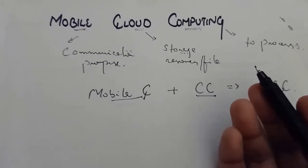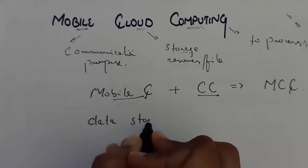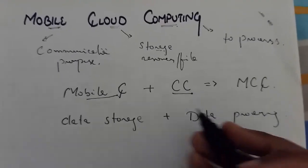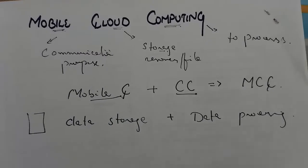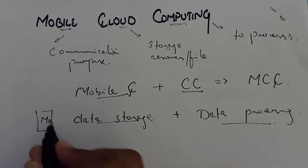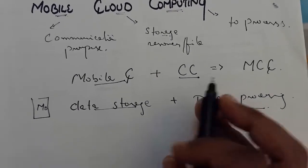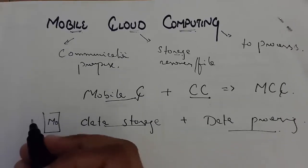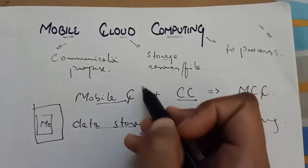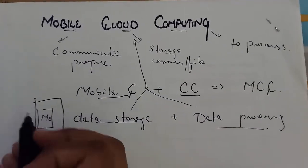Mobile Cloud Computing is basically an infrastructure where data storage and data processing are both outside the mobile device. Our mobile device acts as a thin client. Everything — data storage, data processing — is inside the cloud. The mobile is only working as a thin client, used just for data collection.